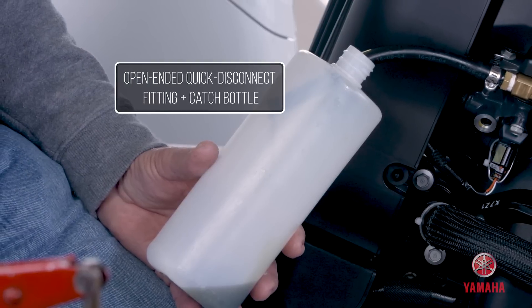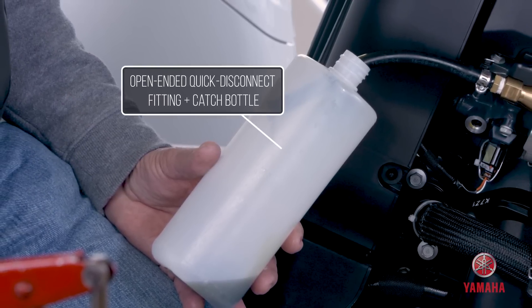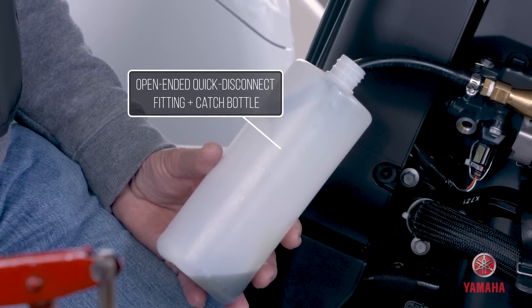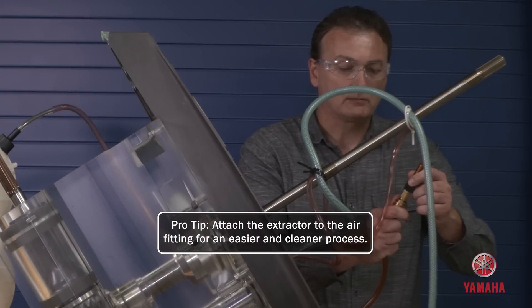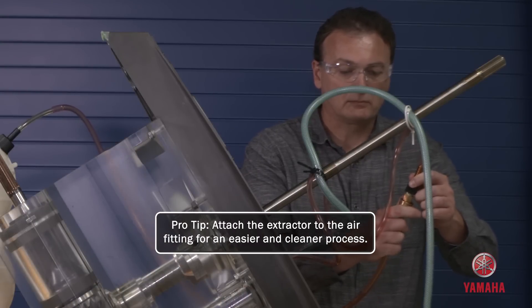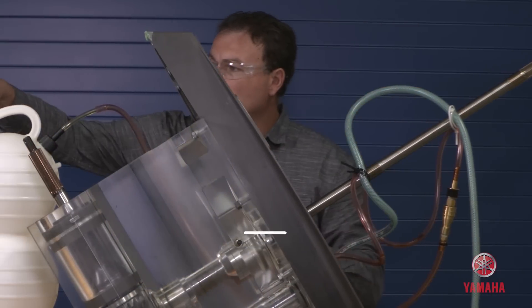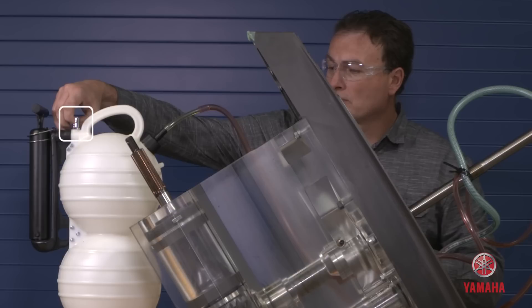An open-ended quick disconnect fitting can be used in conjunction with a catch bottle. However, the easiest and cleanest method is simply to attach the extractor to the air fitting and ensure that the air inlet is open so that the air in the gear case can escape.